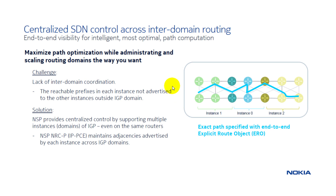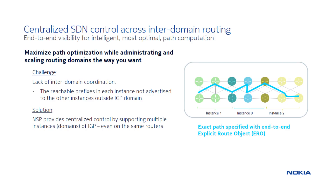One of the challenges in provisioning paths across multiple domains is the lack of inter-domain coordination. As reachable prefixes are not advertised across multiple domains, we solve this problem by discovering these prefixes without requiring domains to re-advertise them, so control plane information is contained within each domain and we compute a path end-to-end.